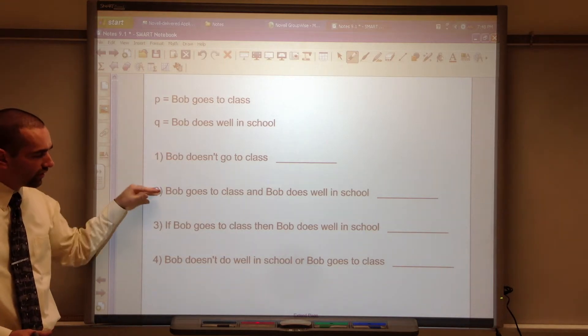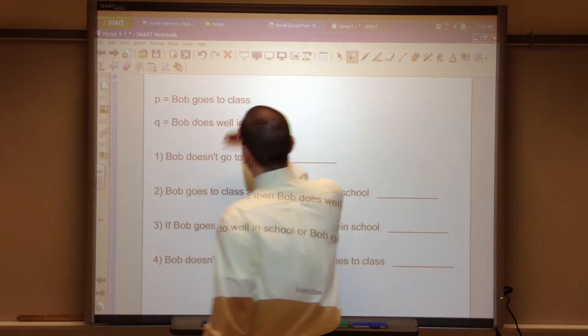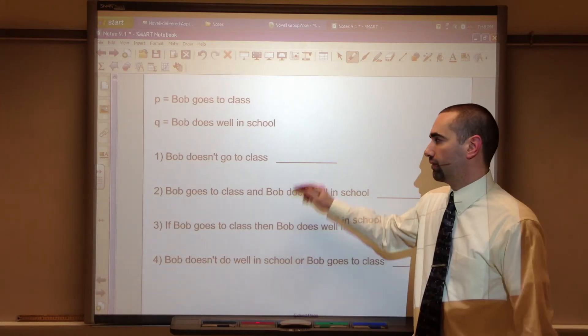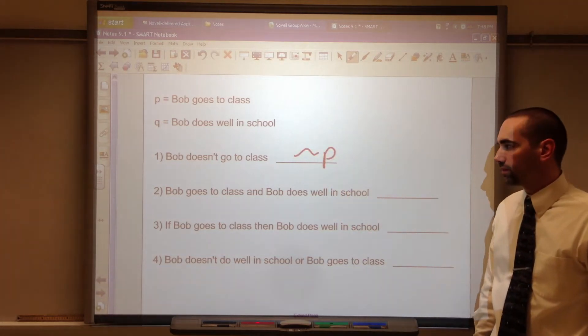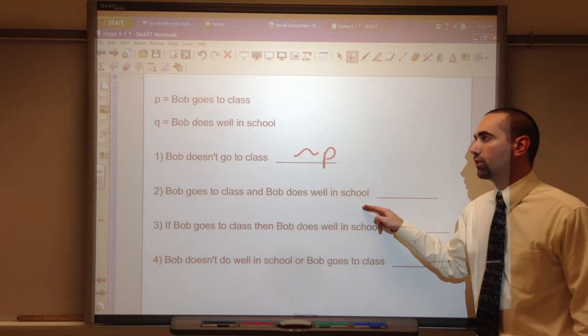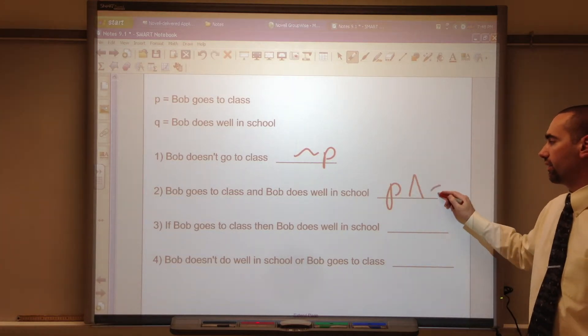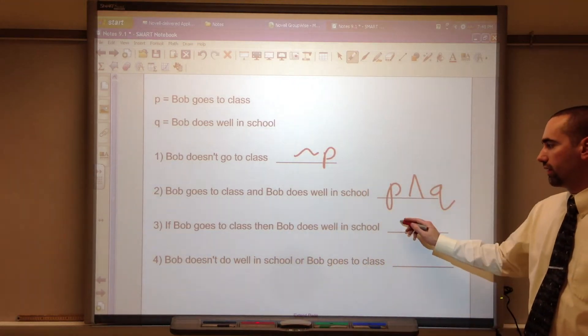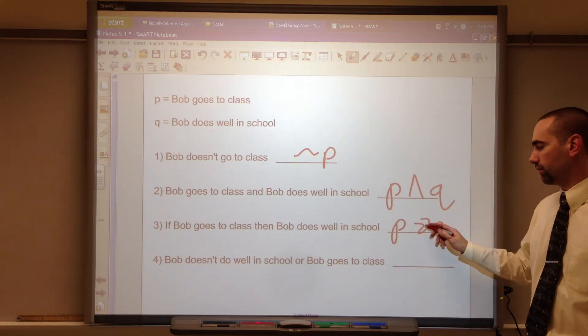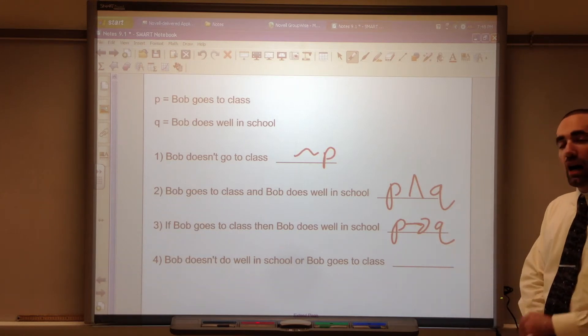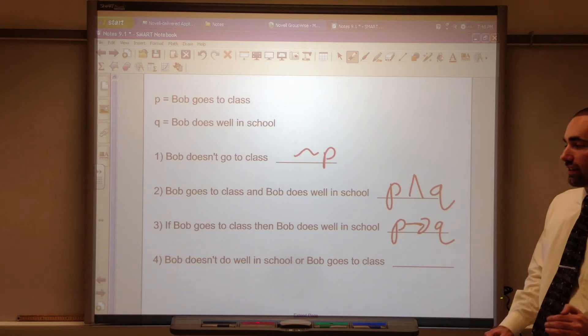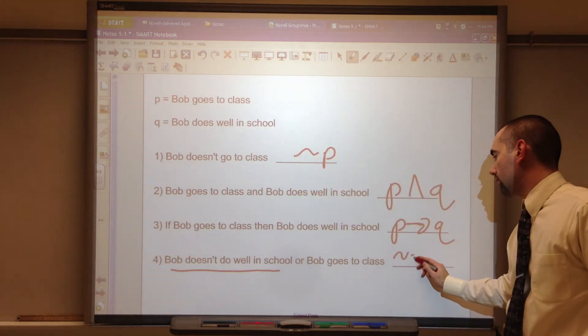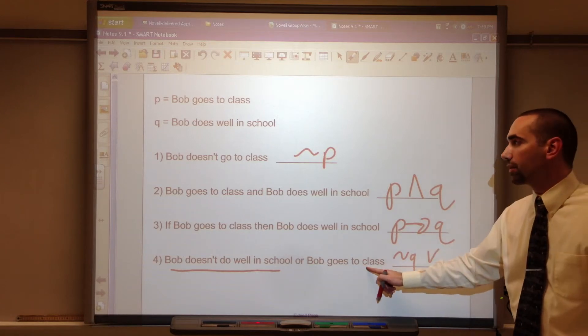Let's convert these statements in symbolic form. Our P is Bob goes to class. Q, Bob goes well in school. Bob doesn't go to class. Not P. Bob goes to class and Bob does well in school. P and Q. If Bob goes to class, then Bob does well in school. P implies Q. It's an arrow. Bob doesn't do well in school or Bob goes to class. Doesn't do well in school, that's Q, but it has a not in there. Not Q or Bob goes to class P.